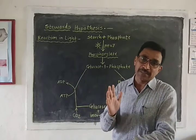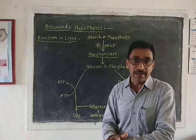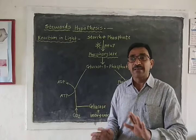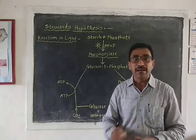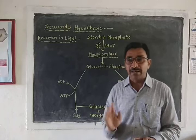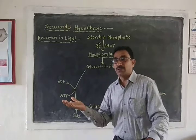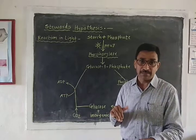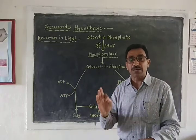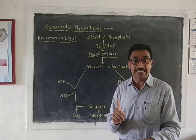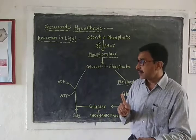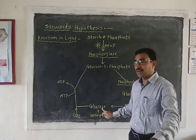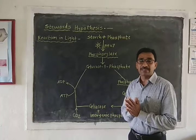The cytoplasm concentration of guard cells increases as compared to the surrounding subsidiary cells. We know very well that guard cells are surrounded by subsidiary cells. The water molecules present in the subsidiary cells then enter into the guard cells because the concentration of the cytoplasm of the guard cells increases due to the dissolved glucose.